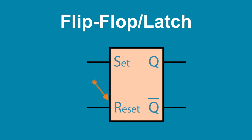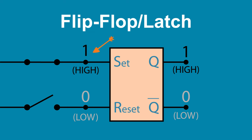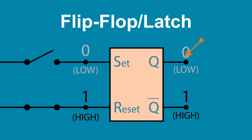The primary output is Q. A second output, not Q, is sometimes also available and is always the inverse of Q. If the output is currently low and set goes high, the output will change to high. If the output is high and reset goes high, the output will change to low.